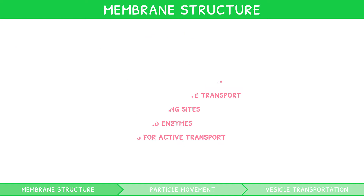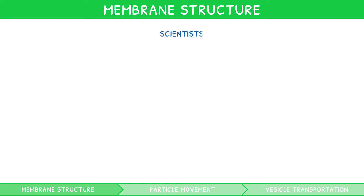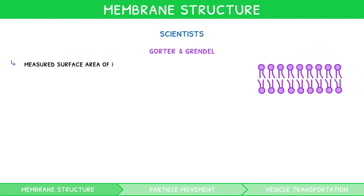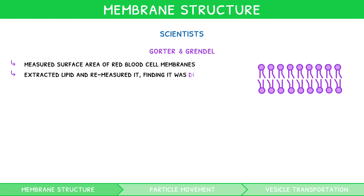This fluid mosaic model wasn't once just dreamt up — there were a series of experiments and scientists who helped determine this structure. The three main pairs of scientists are Gorter and Grendel, Daniele and Davson, and Singer and Nicholson. Gorter and Grendel measured the surface area of some red blood cells' membranes, then extracted the lipid from these cells and re-measured it, finding that it was double. They used this to theorise that the lipid layer was a bilayer.